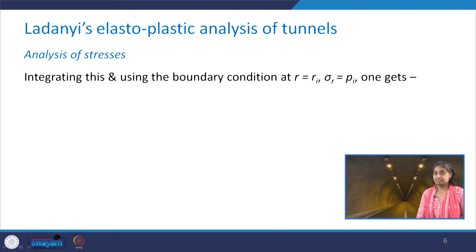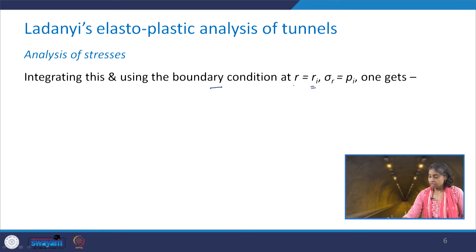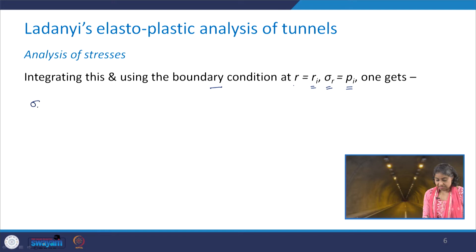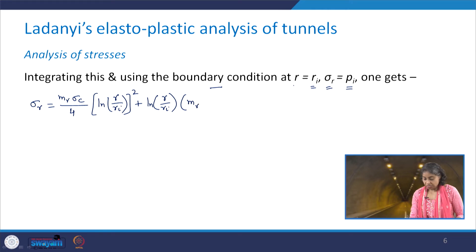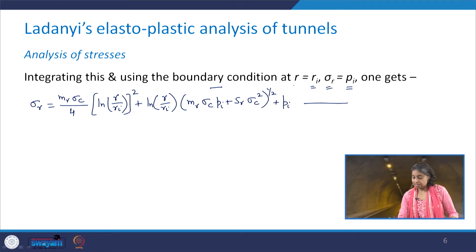Applying the boundary condition at r = r_i, σ_r = p_i, what we have is: σ_r = (m_r · σ_c / 4)[ln(r/r_i)]² + ln(r/r_i) · [m_r · σ_c · p_i + s_r · σ_c²]^(1/2) + p_i. This is equation number 7.